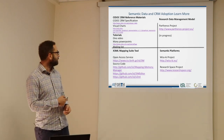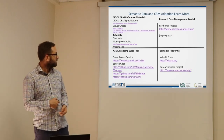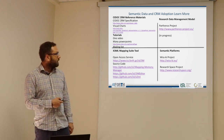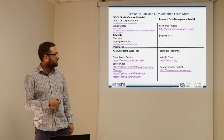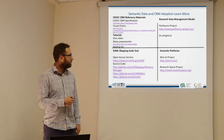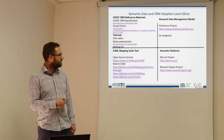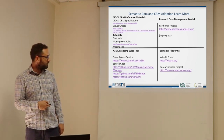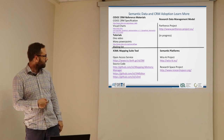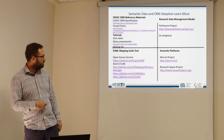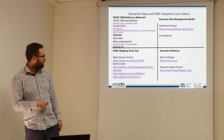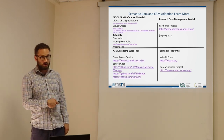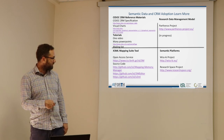Here's some reference information for CIDOC CRM and how to use it, how to manage research data using a semantic model, and Parthenos entities, which can be found on the Parthenos website. Here's the reference to the two semantic platforms, Whiskey and ResearchSpace, and reference information to the X3ML or 3M mapping tool, where you can try it either online or download and install it yourself.